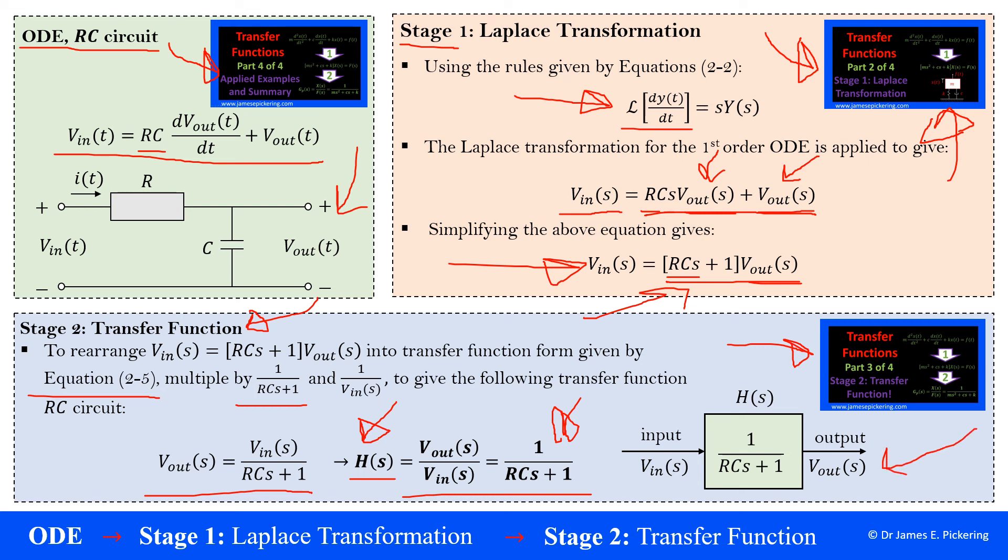Then finally, what you'll see here is the block diagram form. So one of the big reasons why we move from the ordinary differential equations to transfer function form is because we represent components or sub-components of a closed loop control system as transfer functions, which effectively enables us to look at the input or model the inputs and the outputs in this manner. So you see obviously the input is V in, the voltage in, the output is voltage out. And then you'll see here the form of the system here with the RC circuit.